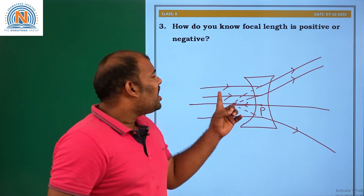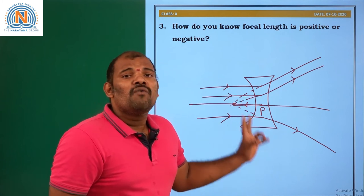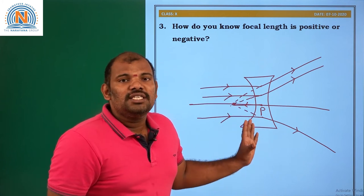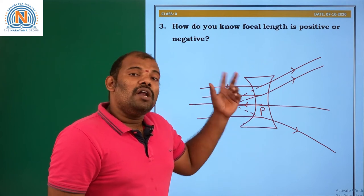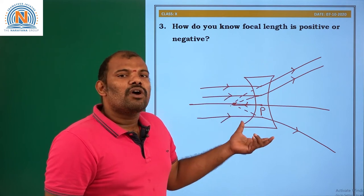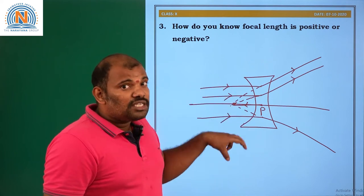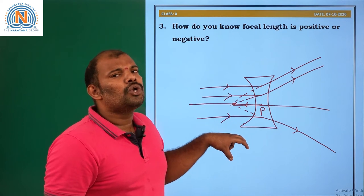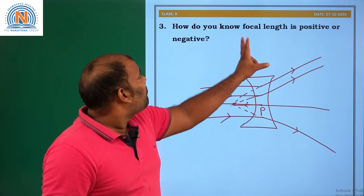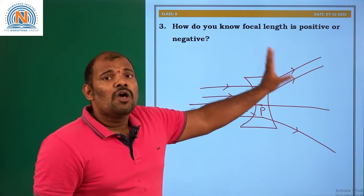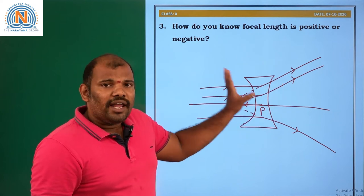So that is why the concave lens focal length is negative and the convex lens focal length is positive. Based on this sign convention rule, we can say whether the focal length is positive or negative.